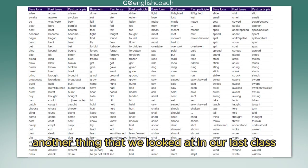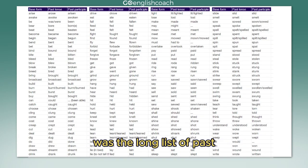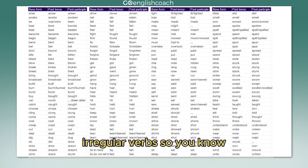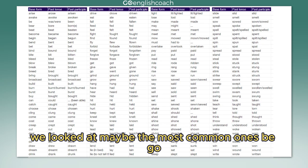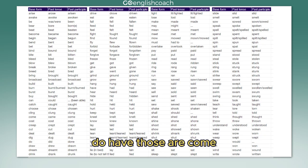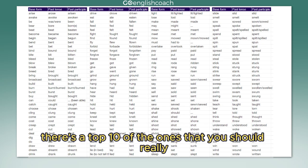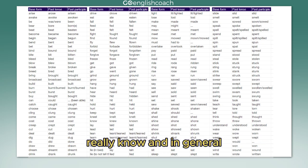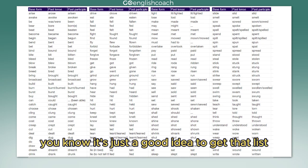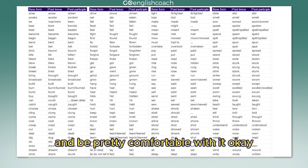Another thing that we looked at in our last class was the long list of past irregular verbs. We looked at the most common ones: be, go, do, have, come — those are kind of the top five. There's a top ten that you should really know, and in general it's a good idea to get that list and be pretty comfortable with it.